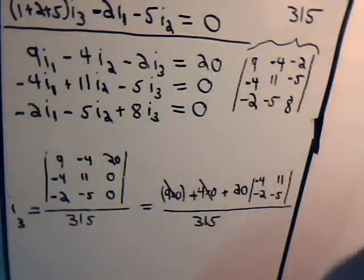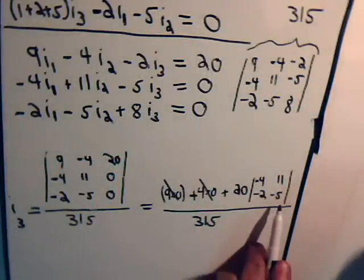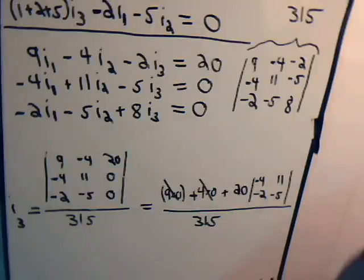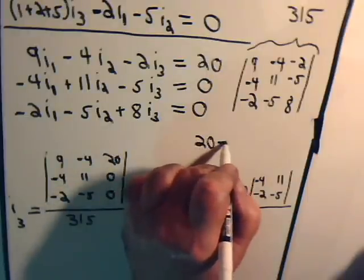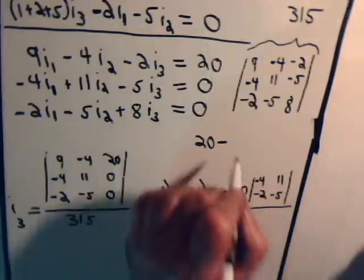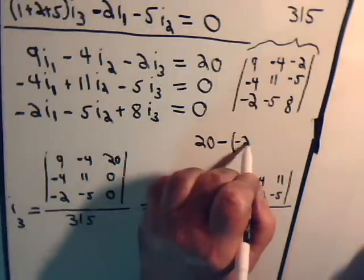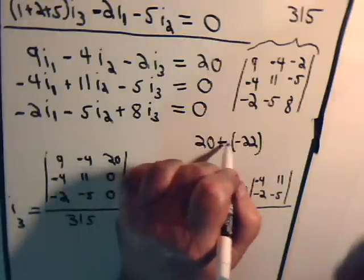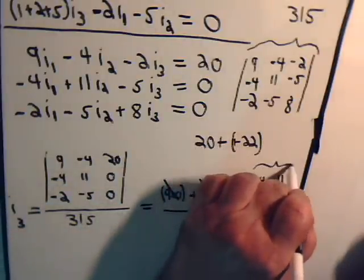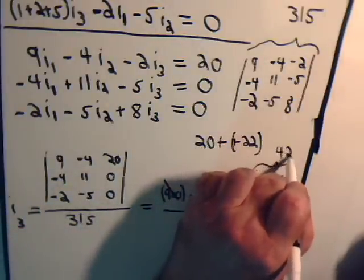That's 0, that is 0. Here, we have 20 minus negative 22. So we have 20 minus negative 22. That's 20 plus 22. That is equal to 42.